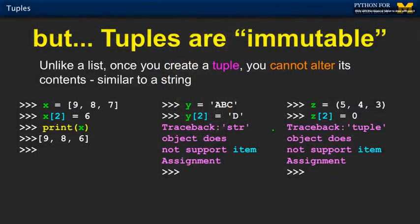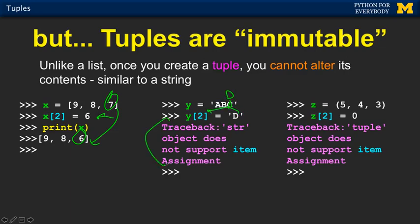So if we take a look: if we have a list 9, 8, 7, we can change x sub 2 to 6, and then that changes the 7 to be a 6 — lists are mutable. Here we have a 3-character string a, b, c, and we want to do character 2 and turn that to a d with this assignment statement. And Python says no, we're not allowed to do that.